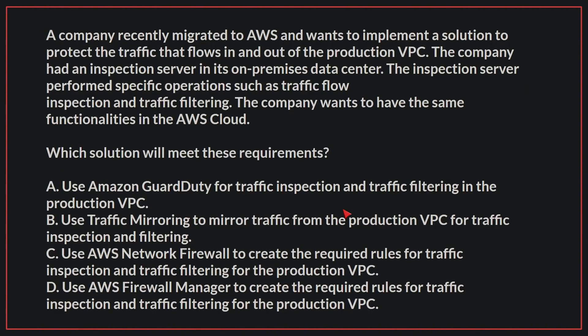A company recently migrated to AWS and wants to implement a solution to protect the traffic that flows in and out of the production VPC. The company had an inspection server in its on-premises data center that performed specific operations such as traffic flow inspection and traffic filtering. The company wants to have the same functionalities in the AWS cloud. Which solution will meet these requirements?